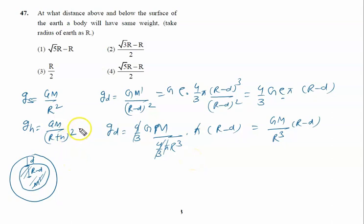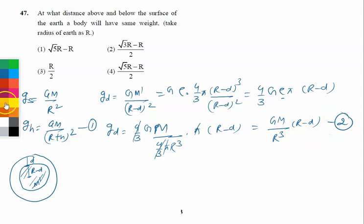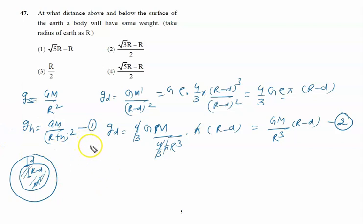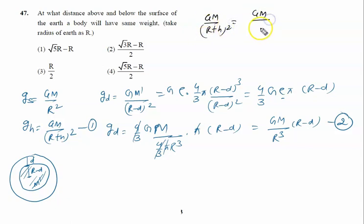Let equation one be gravity at height h: GM upon (R plus h) squared, and equation two be gravity at depth d: GM upon R cubed into (R minus h). Now suppose d and h are both the same value h. Setting equation one equal to equation two, GM cancels, giving R cubed equal to (R plus h) squared into (R minus h).